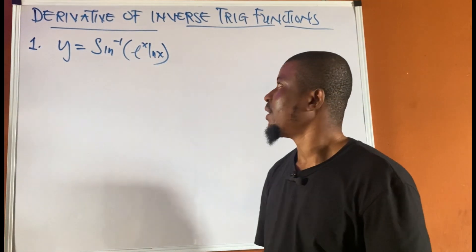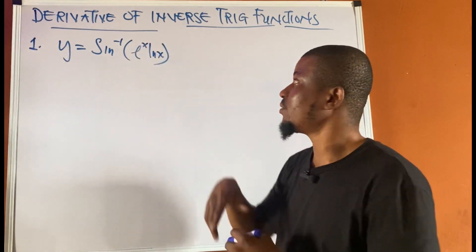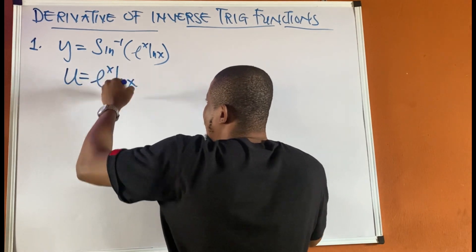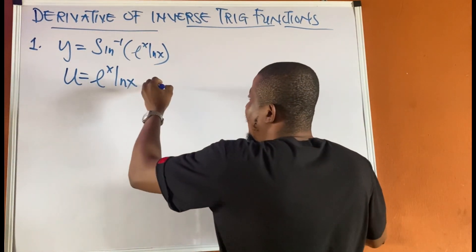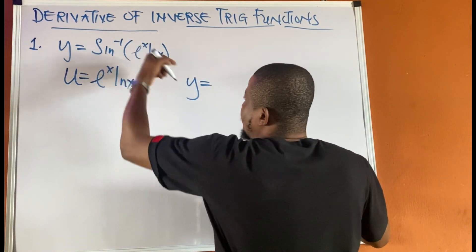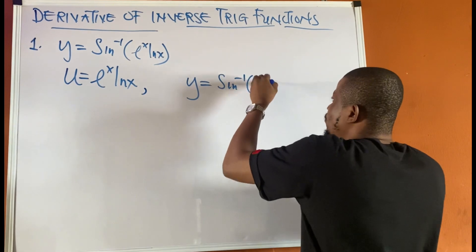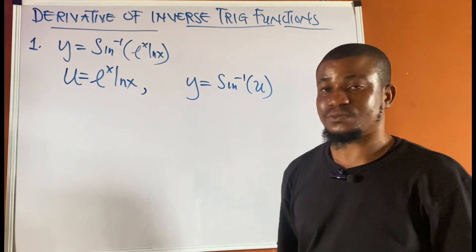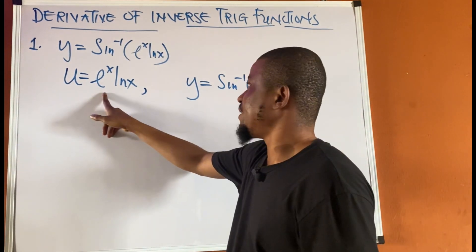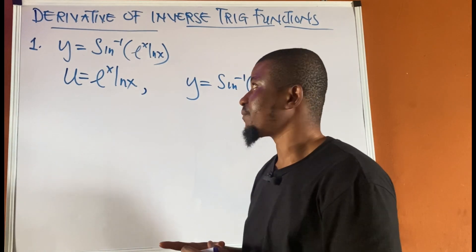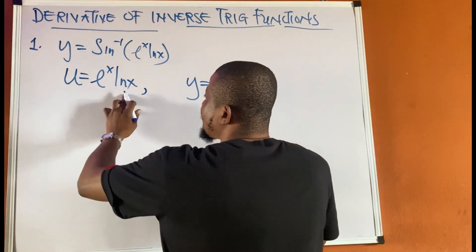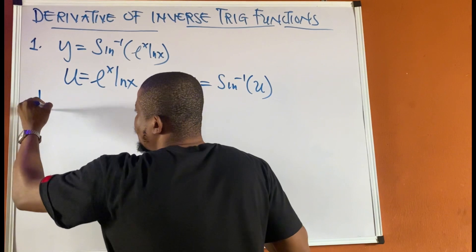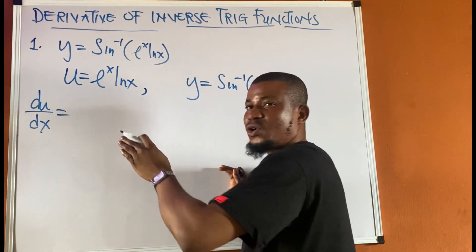Looking at this function, there is a chain of functions, and inside the chain there is a product of functions. So we have a product of functions, a chain of functions, and an inverse trig function. First, identify the inside function and call it u: let u equal eˣ · ln x. Then y equals sine inverse of u.